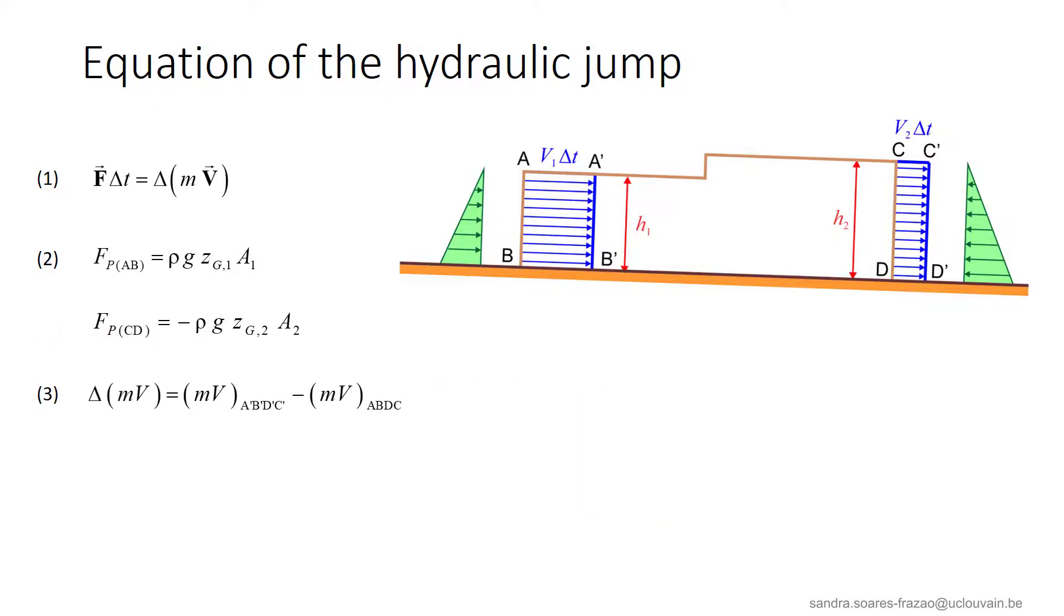The momentum balance is the difference of momentum between the volumes A, B, D, C, and A prime, B prime, D prime, C prime. So, this can also be written like this, as the difference of momentum between these two volumes. Finally, the momentum balance in equation 3 can be expressed like this, where the quantities between square brackets are the mass of this volume and of this volume respectively.